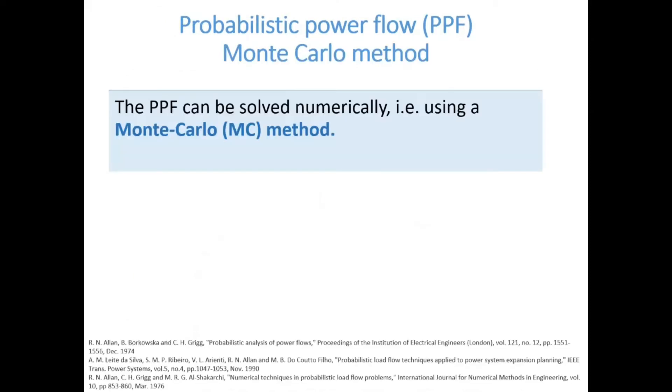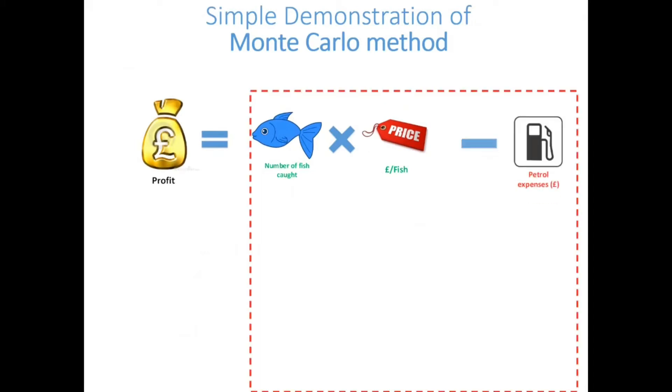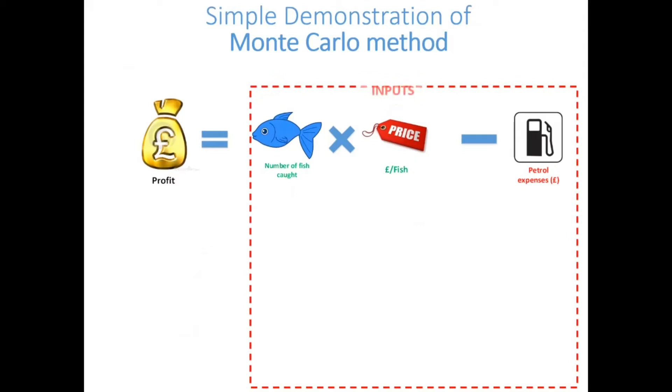The probabilistic power flow can be solved numerically, for example using a Monte Carlo method. Here we can try to understand the Monte Carlo method using a simple example where a fisherman wants to calculate his daily profit which is equal to the number of fish caught multiplied by the price of one fish subtracted by the petrol expenses. So the price of one fish is 10 pounds. The petrol expenses are 20 pounds.